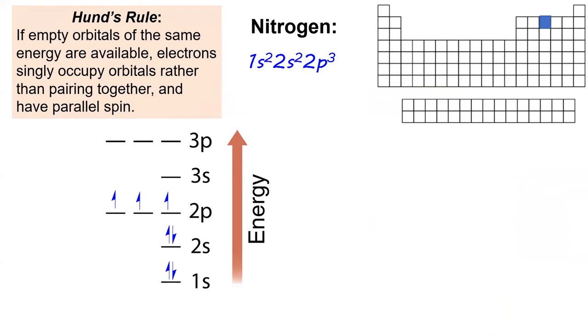Nitrogen has an additional electron, which goes in the last vacant 2p orbital spot, spin matched to the other two electrons. Nitrogen's electron configuration is 1s² 2s² 2p³.